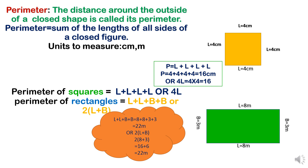Now look at the perimeter of a square. We know that the length of four sides of a square are the same. Thus, the perimeter of a square can be calculated by adding all four sides. The perimeter of a square is equal to length plus length plus length plus length, which is equal to four times the length of a side.